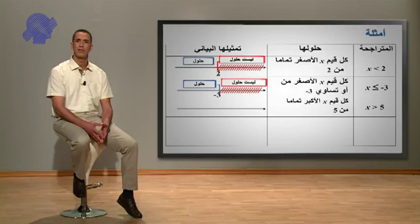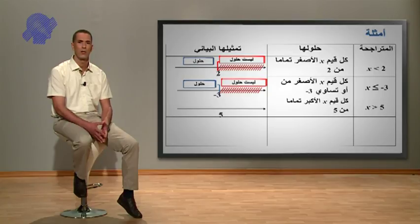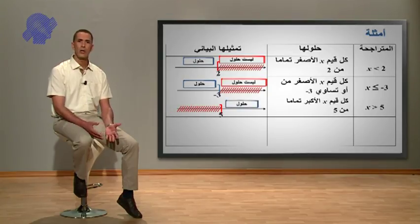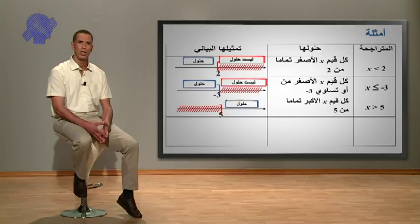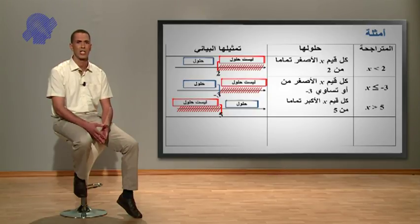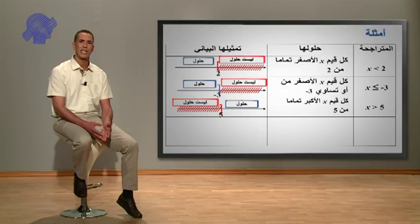X أكبر تماماً من 5، كل قيم X الأكبر تماماً من 5 هي حلول للمتراجحة. لاحظوا الجزء المشطب هو غير حلول أما الجزء الآخر فهو حلول لهذه المتراجحة، مع 5 هو عدد غير حل لهذه المتراجحة.